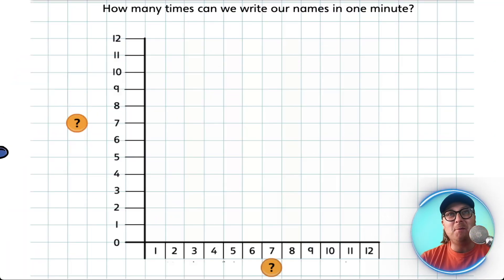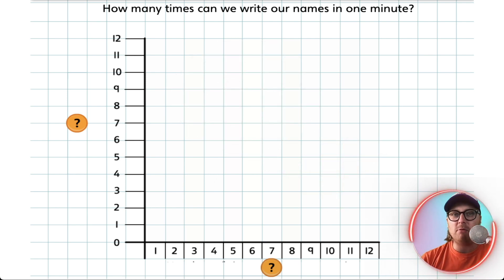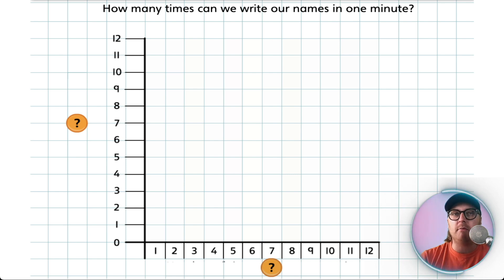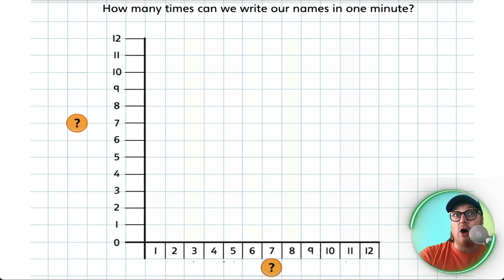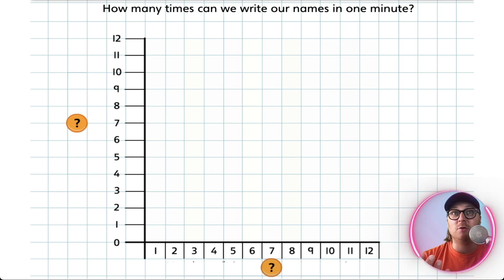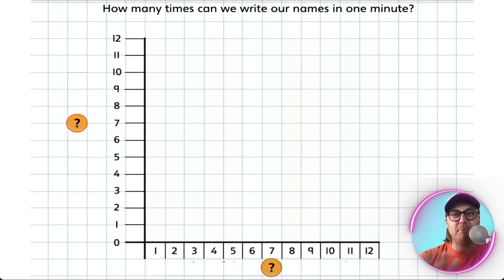I've got a little challenge for you at home. I would like you to create your very own block graph. I've done a title for you: 'how many times can you write your name in one minute.' I've also done the y and x-axis and numbered them up. What I haven't done is labelled the x-axis, so I'd like you to label that at home and complete the graph itself. You're going to need a timer and somebody to time you. Whether you're doing this at home on your own or in class with your classmates, label up this graph correctly, fill in the block parts, and use a colouring pen to colour in the sections to make them nice and clear. Please don't forget to use a ruler — you can't do a block graph without using a ruler.